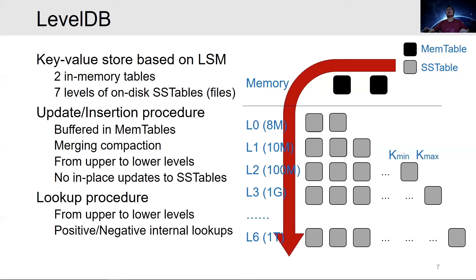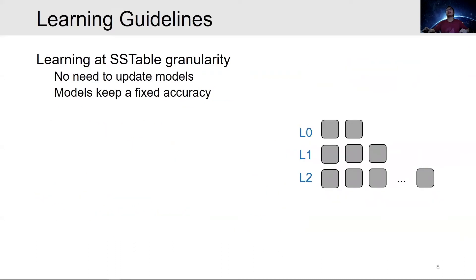Upon lookups, in-memory tables are first searched, and SSTables from upper to lower levels are searched. The range of keys in an SSTable is recorded, and if the target falls into the range, the table is loaded and searched. The search may not find the target key — in such cases, which we call a negative internal lookup, the search proceeds to the next file or the next level until we have a positive internal lookup. Since those on-disk tables are immutable during their lifetime, it is natural to learn a model for each table, with no need to update these models during writes.